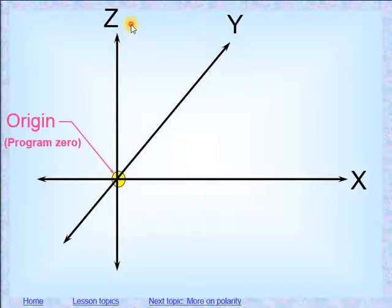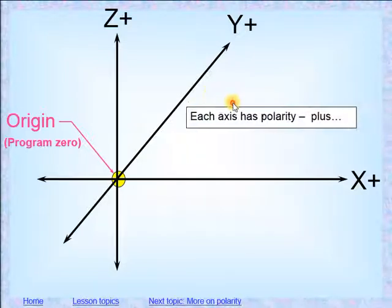We need the Z so that we don't crash into the part. We need to be able to go over the part, and we need to go down into the part. So anything up in the Y is a positive, anything over to the right in the X is a positive, and anything up off of the part is a positive in the Z. Z is pretty simple. Away from the part is positive, down into the part, or removing material is negative.